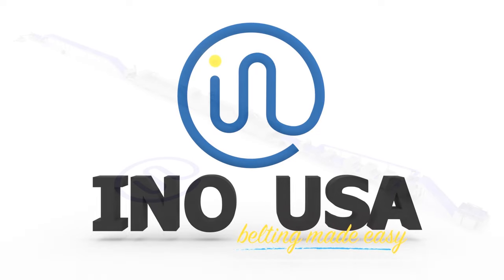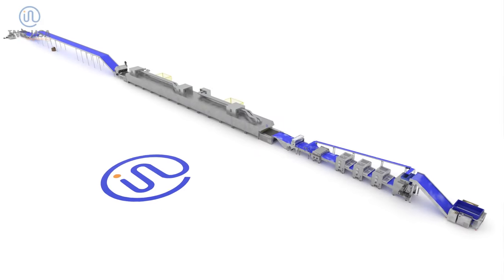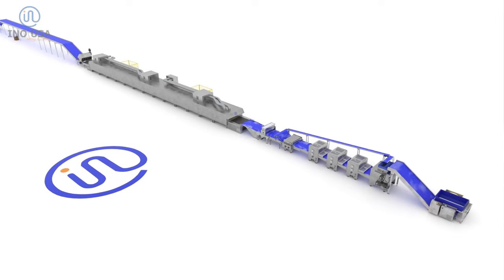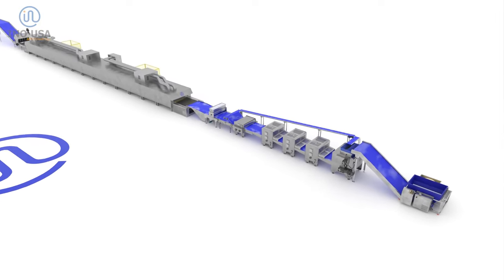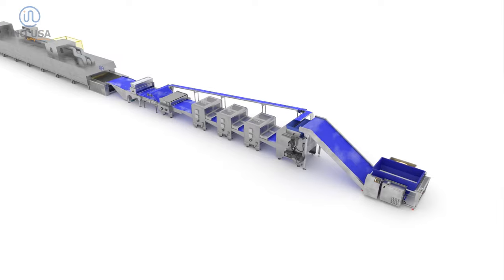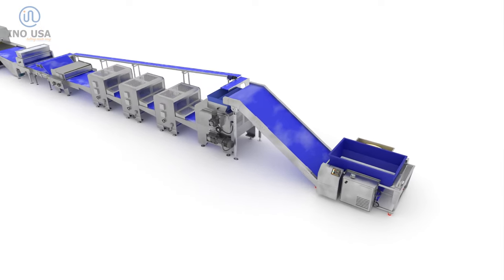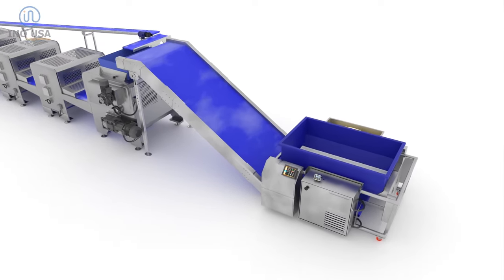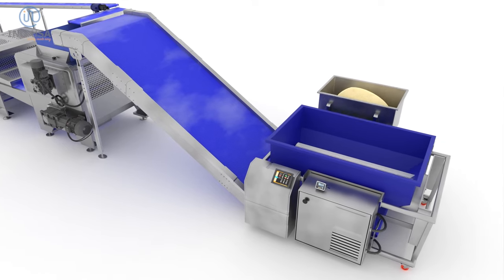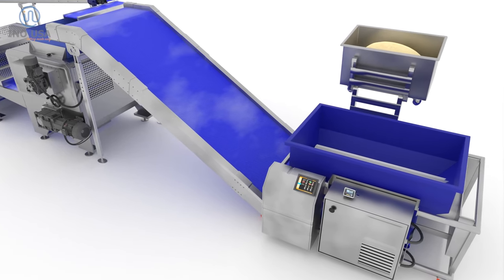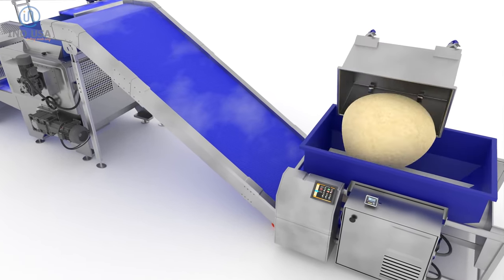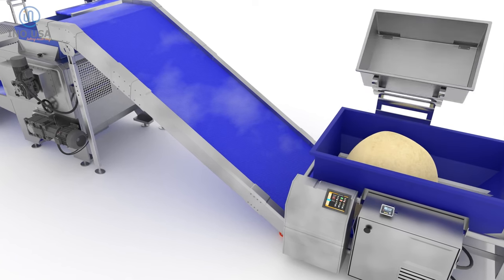Belting made easy. Our first step in cracker production is when the mixed dough is loaded from a mobile tub into a live bottom bin.